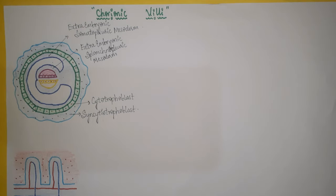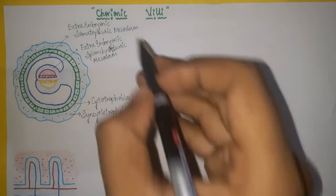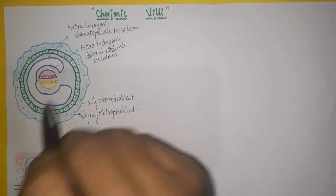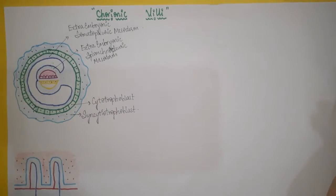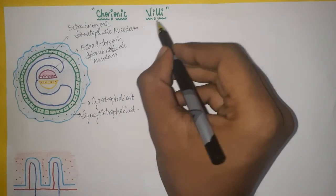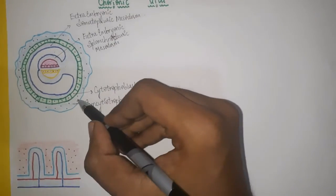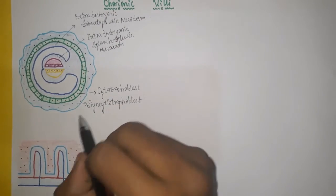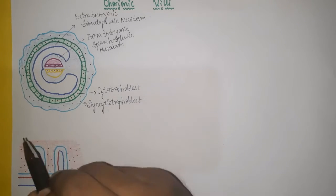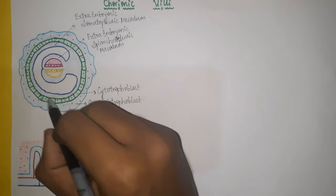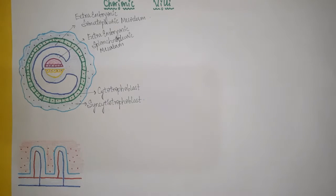This completes the basics of the blastocyst. Now we come to the chorionic villi — it means villi of chorion. Villi means finger-like projections. Chorion means all these layers: syncytiotrophoblast plus cytotrophoblast plus the underlying extra-embryonic somatopleuric mesoderm together form the chorion. The villi arising from chorion are called chorionic villi.